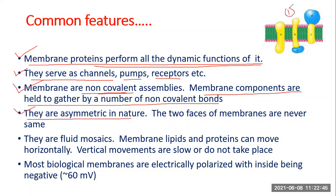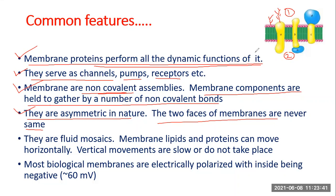All biological membranes are asymmetric in nature — the two faces of the biological membrane are never identical. Carbohydrate units attached to lipids and proteins are found only on the extracellular face; you will generally not find carbohydrate units on the intracellular (cytoplasmic) face. Because of this, the two faces of the membrane are always different from each other.